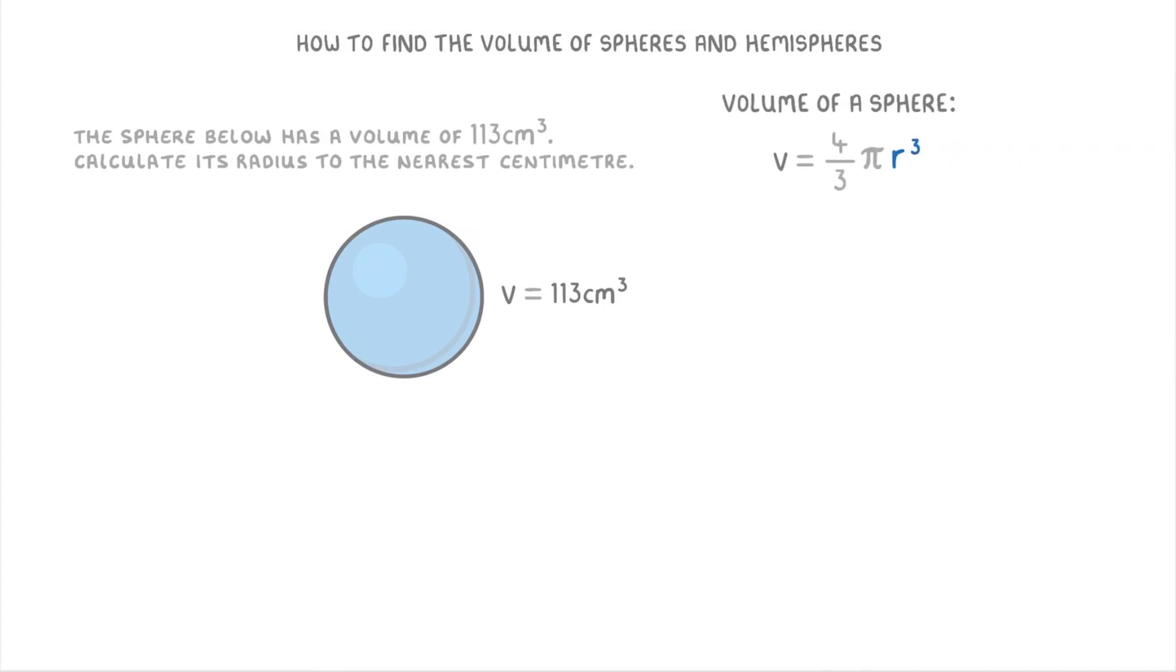So if we take our formula of volume equals 4 thirds pi r cubed, we're trying to work out the radius r this time. So the first thing that we're going to need to do is rearrange the formula to get the r by itself.